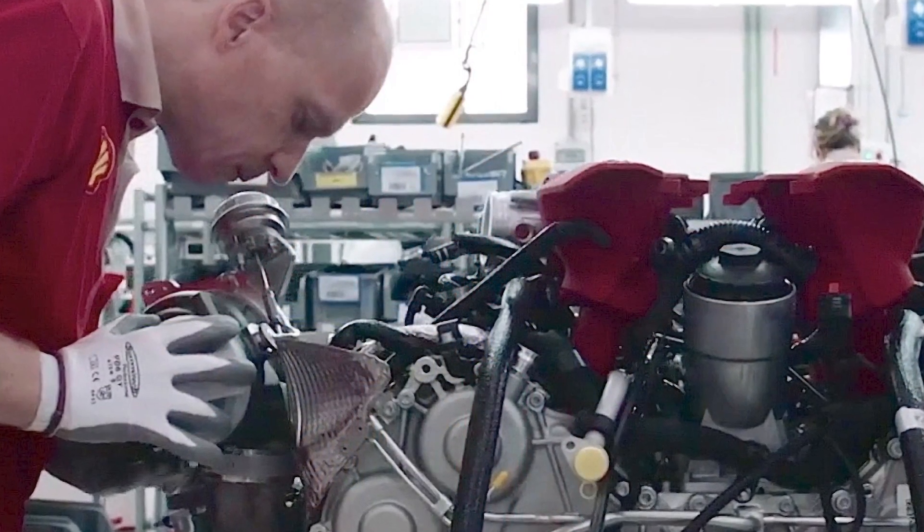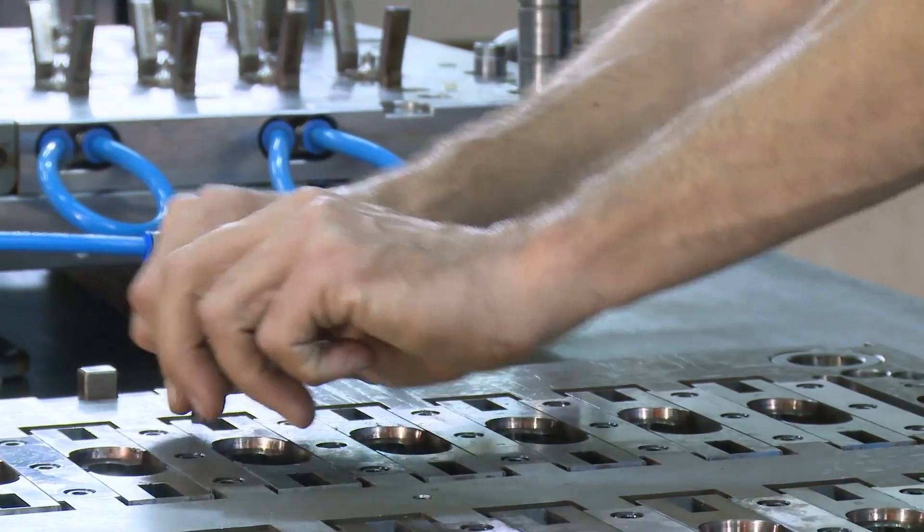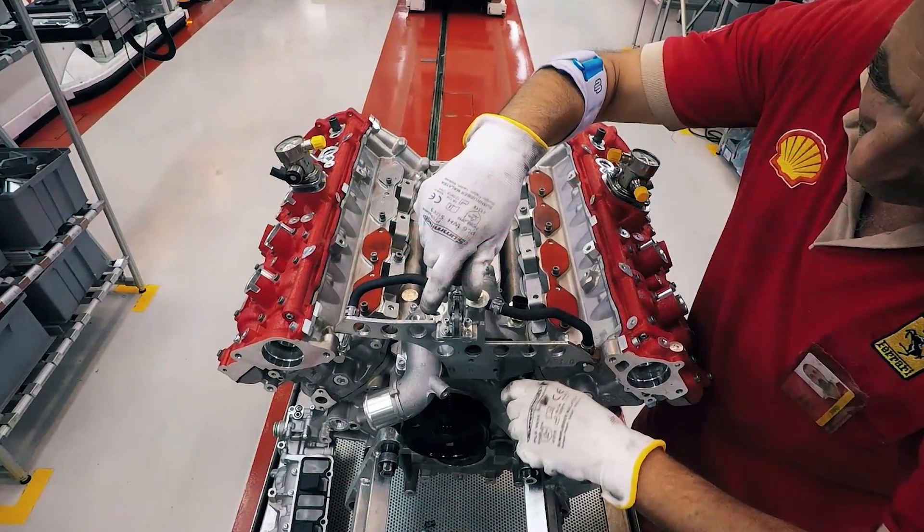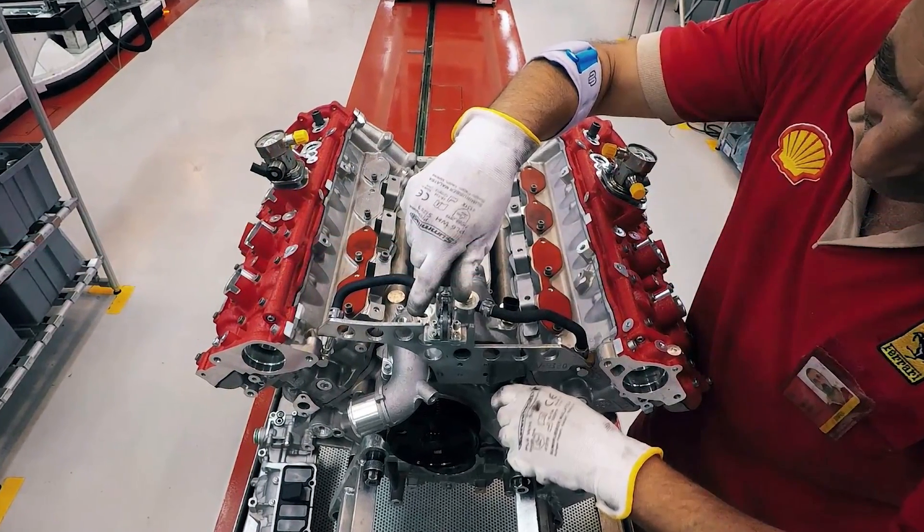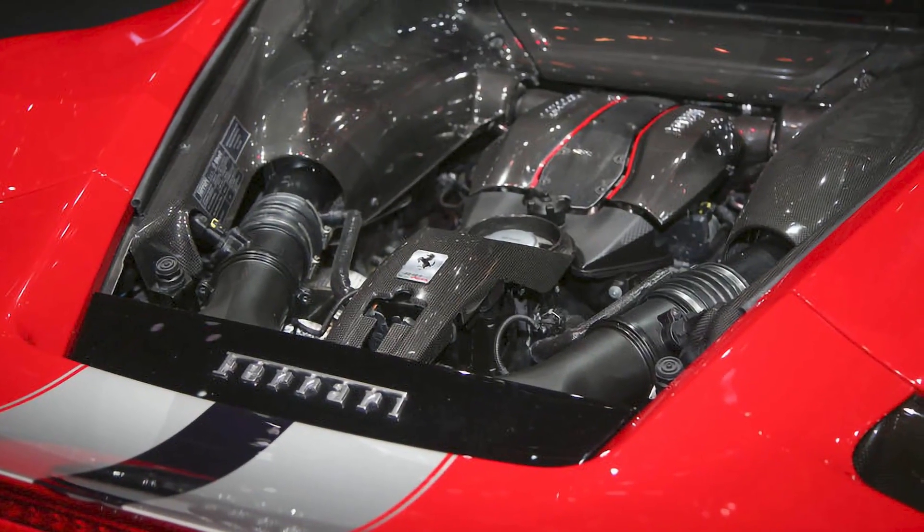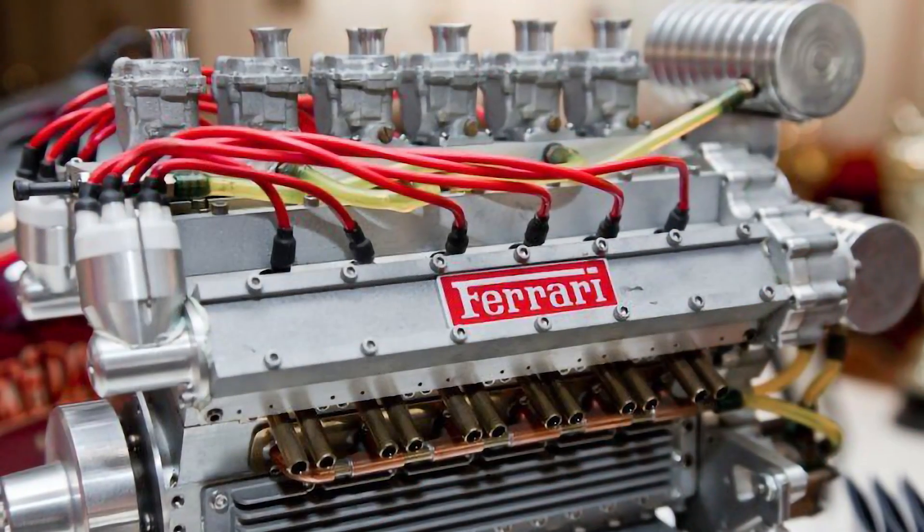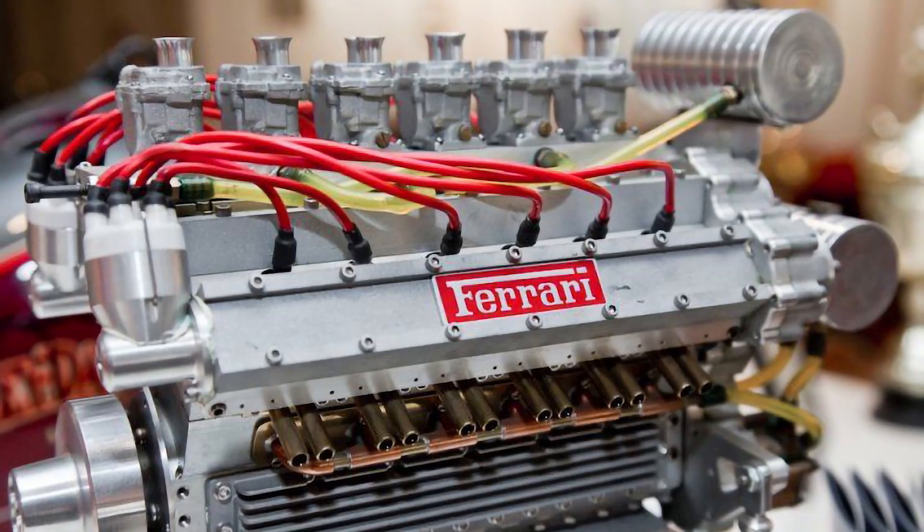The hand-assembled engines need such intricate detailing and meticulous work that there are more than 30 building stations on site. This means as it gets built, the engine moves from one employee to the other. One particular engine model that has an unshakable reputation among sports car lovers is the F136, which is also known as the V8 engine.